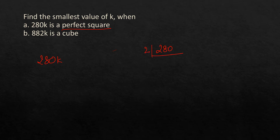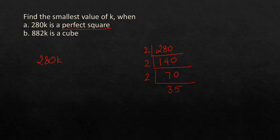Doing prime factorization of 280: 280 = 2 × 140 = 2 × 2 × 70 = 2 × 2 × 2 × 35. And 35 = 7 × 5. So 280 = 2 × 2 × 2 × 7 × 5.